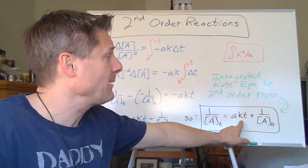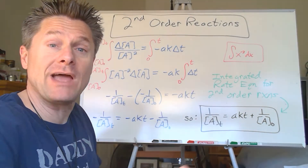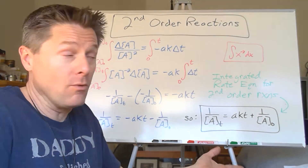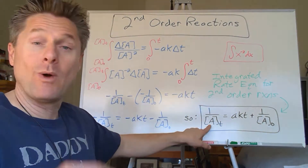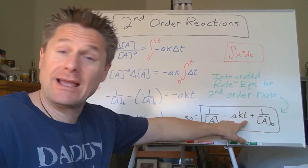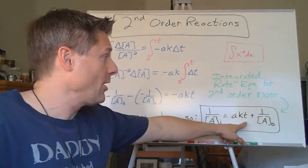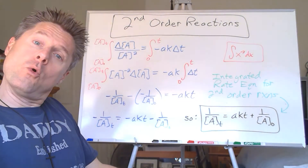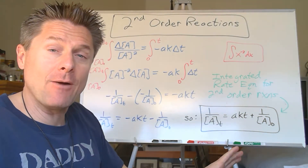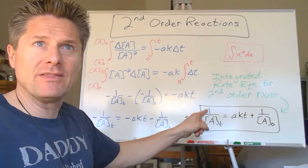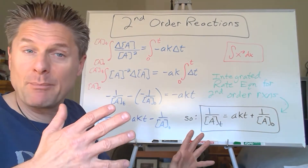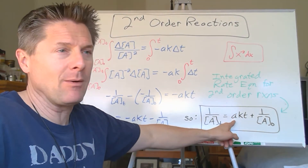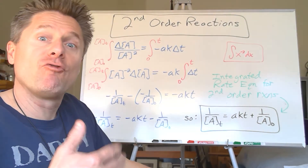That's what we use these integrated rate equations for — to look at time versus concentration. We can calculate the concentration at any time along the reaction pathway, or vice versa. If we know the initial concentration and want to reach a final concentration, and we know the rate constant and A, we can calculate how long to run the reaction and stop it right there. Or if we know the time elapsed and the initial and final concentrations in lab, we can calculate the rate constant. So this one, let's mix it up and do an example solving for the rate constant.